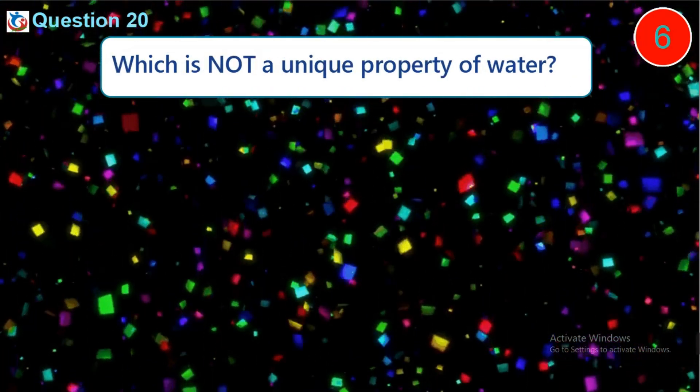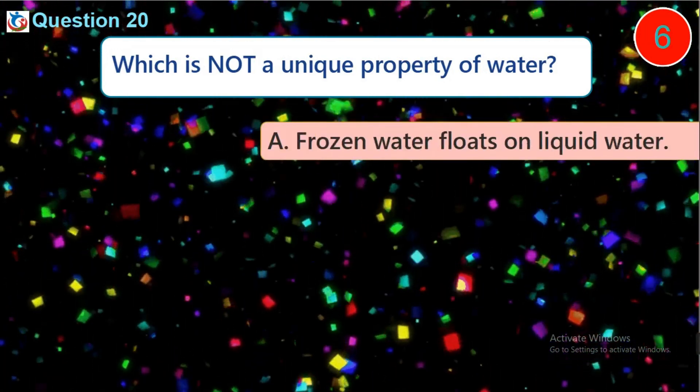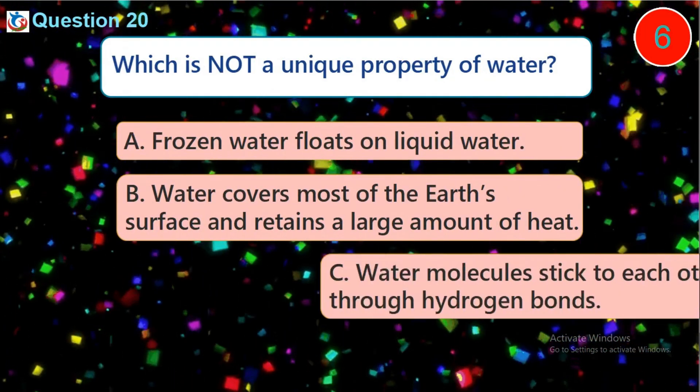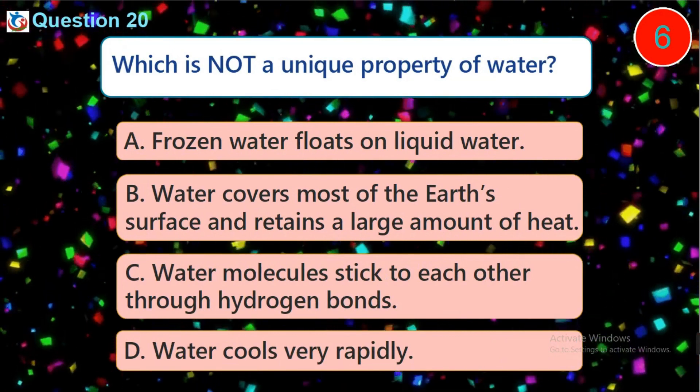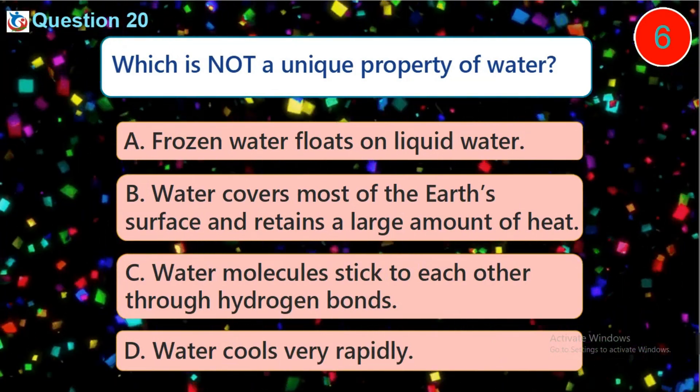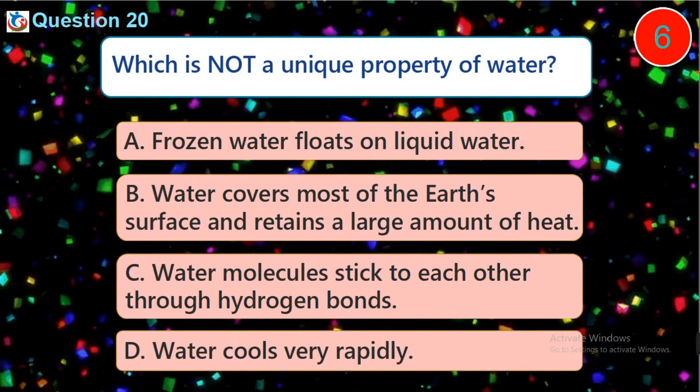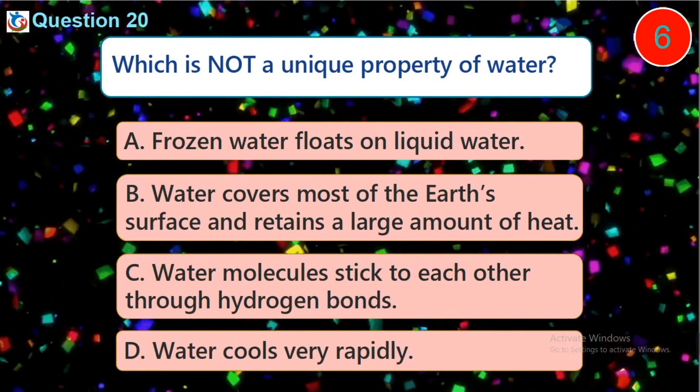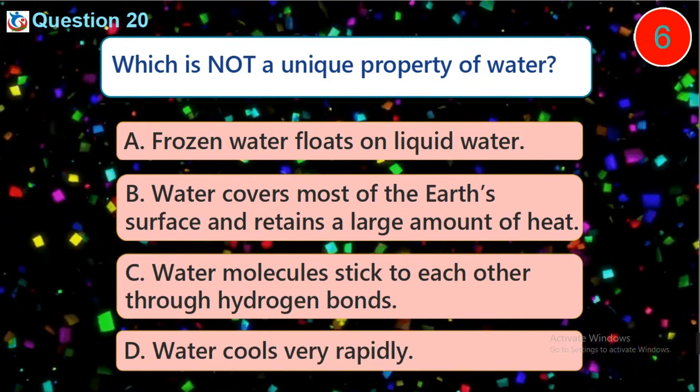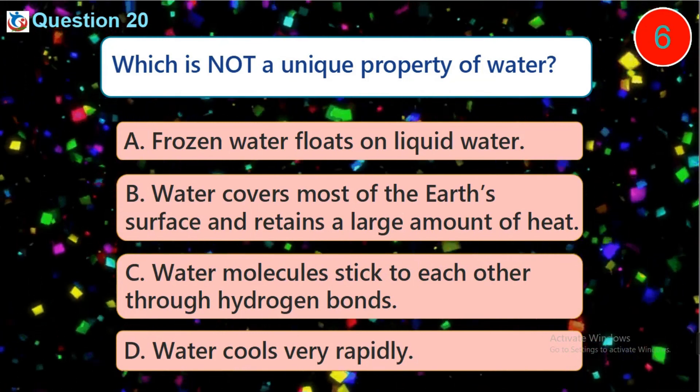Question 20. Which is not a unique property of water? A. Frozen water floats on liquid water B. Water covers most of the earth's surface and retains a large amount of heat C. Water molecules stick to each other through hydrogen bonds D. Water cools very rapidly